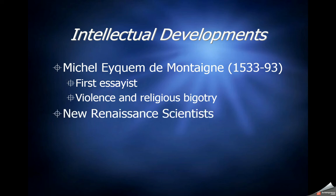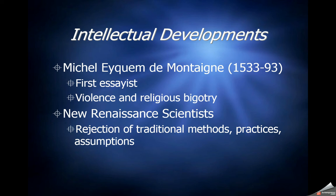These new Renaissance scientists had a huge impact on their culture and on our modern knowledge of solar systems, planets, and orbits. They rejected the older traditional Ptolemaic view of the universe. Key figures include Galileo and Copernicus, among many others.